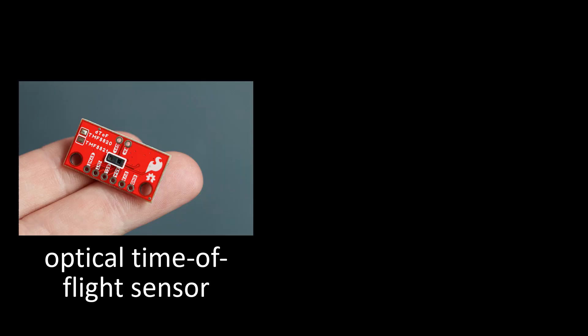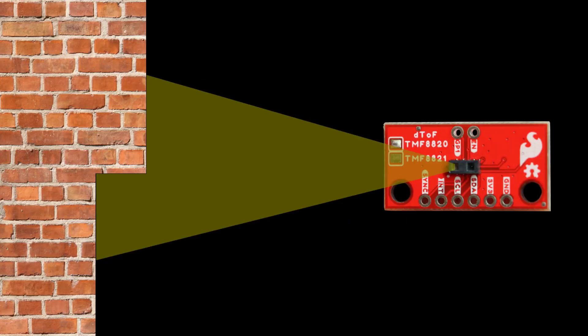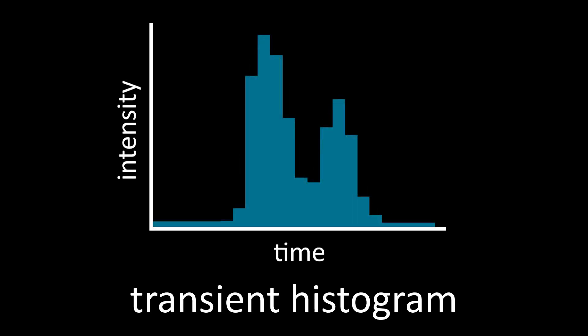Optical time-of-flight sensors which measure the scene transient have recently become widely available. These sensors operate by illuminating the scene with a pulse of light and measuring the shape of that pulse over time as it returns back from the scene in a transient histogram.